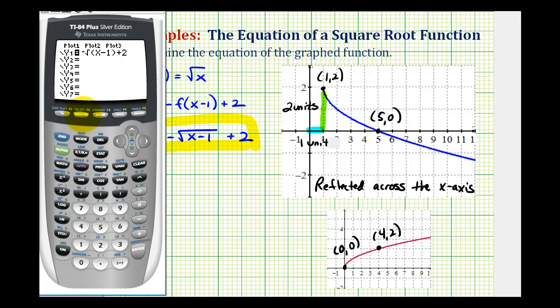And now let's make sure that our window matches the window here. So we'll press window, notice the x min is negative two, the x max is eleven. And now we can press graph, and notice how it does look like our function matches the given blue function.